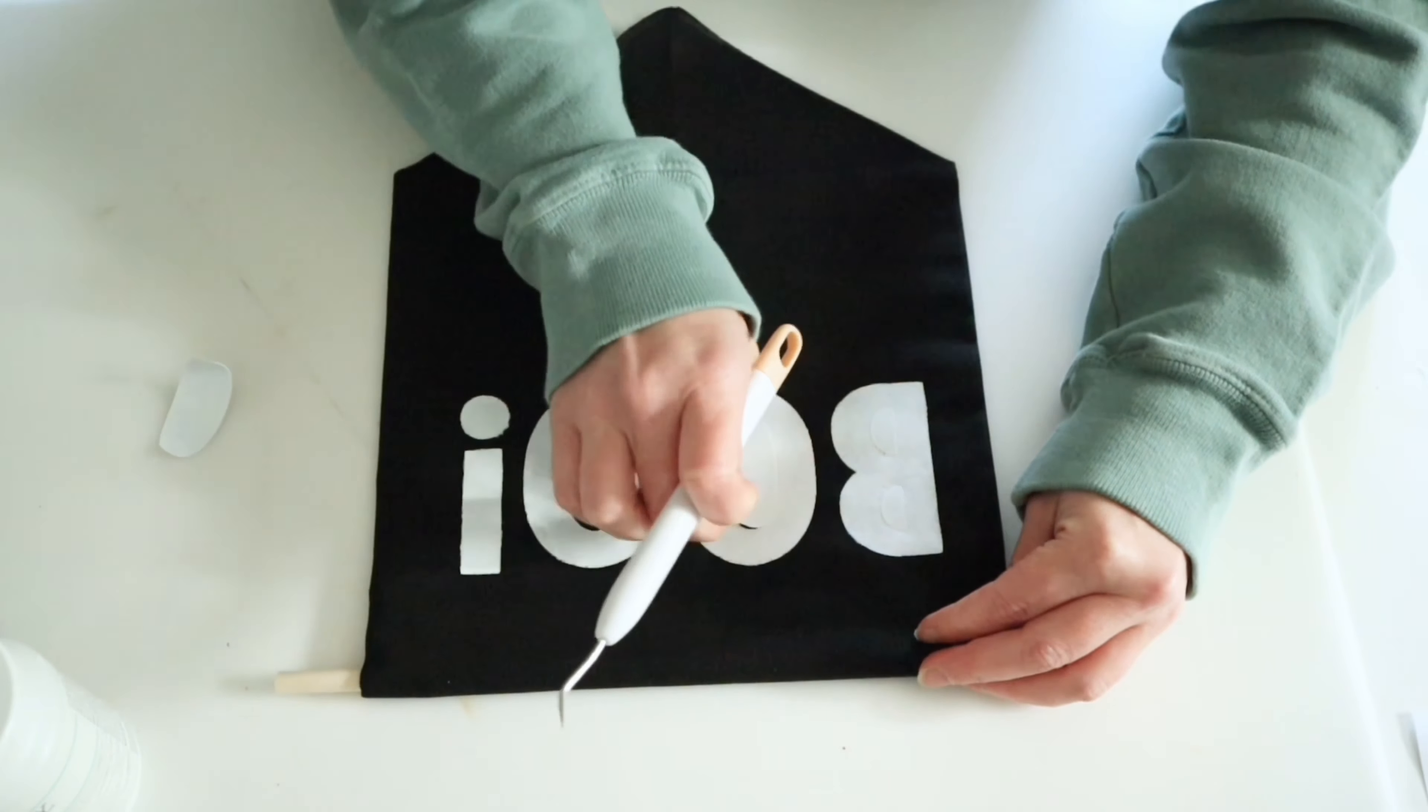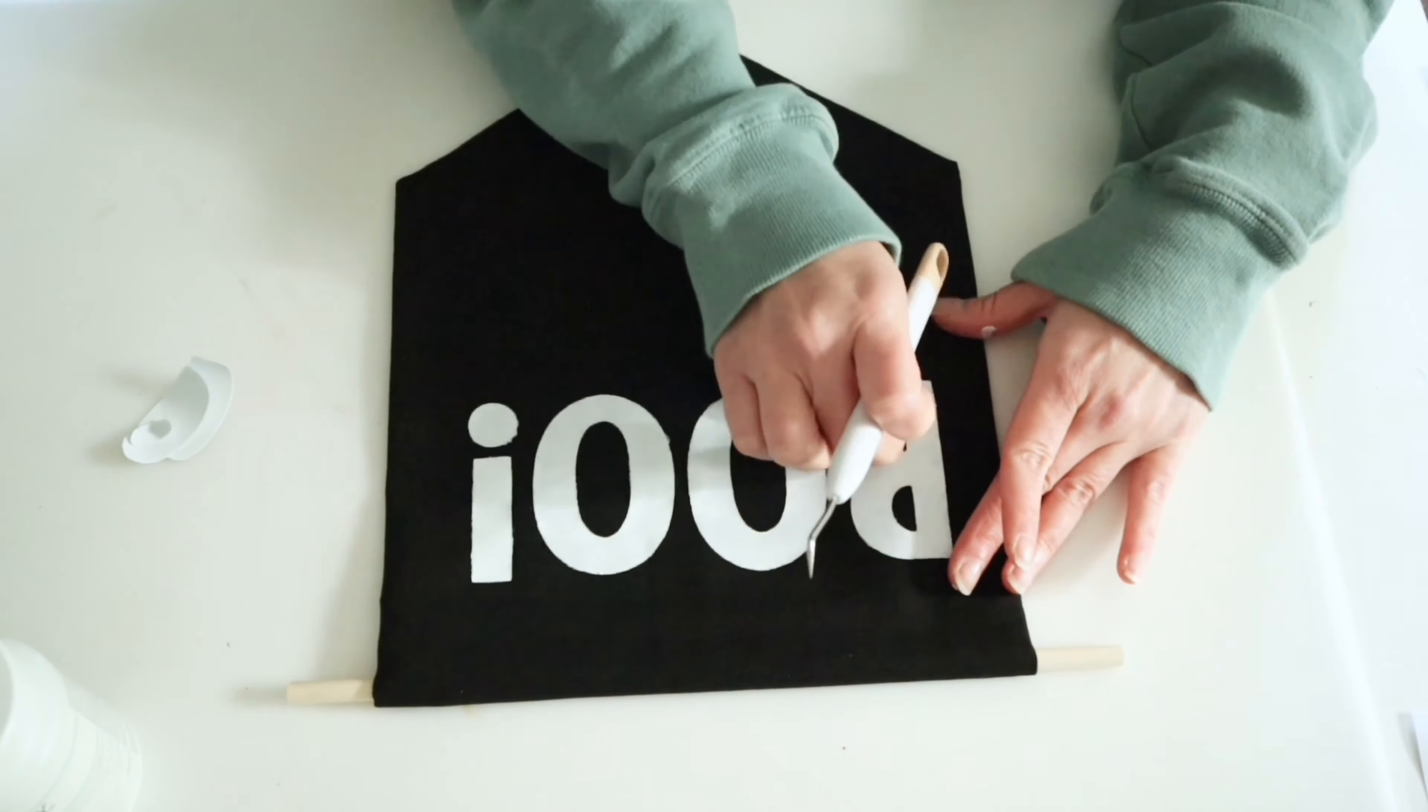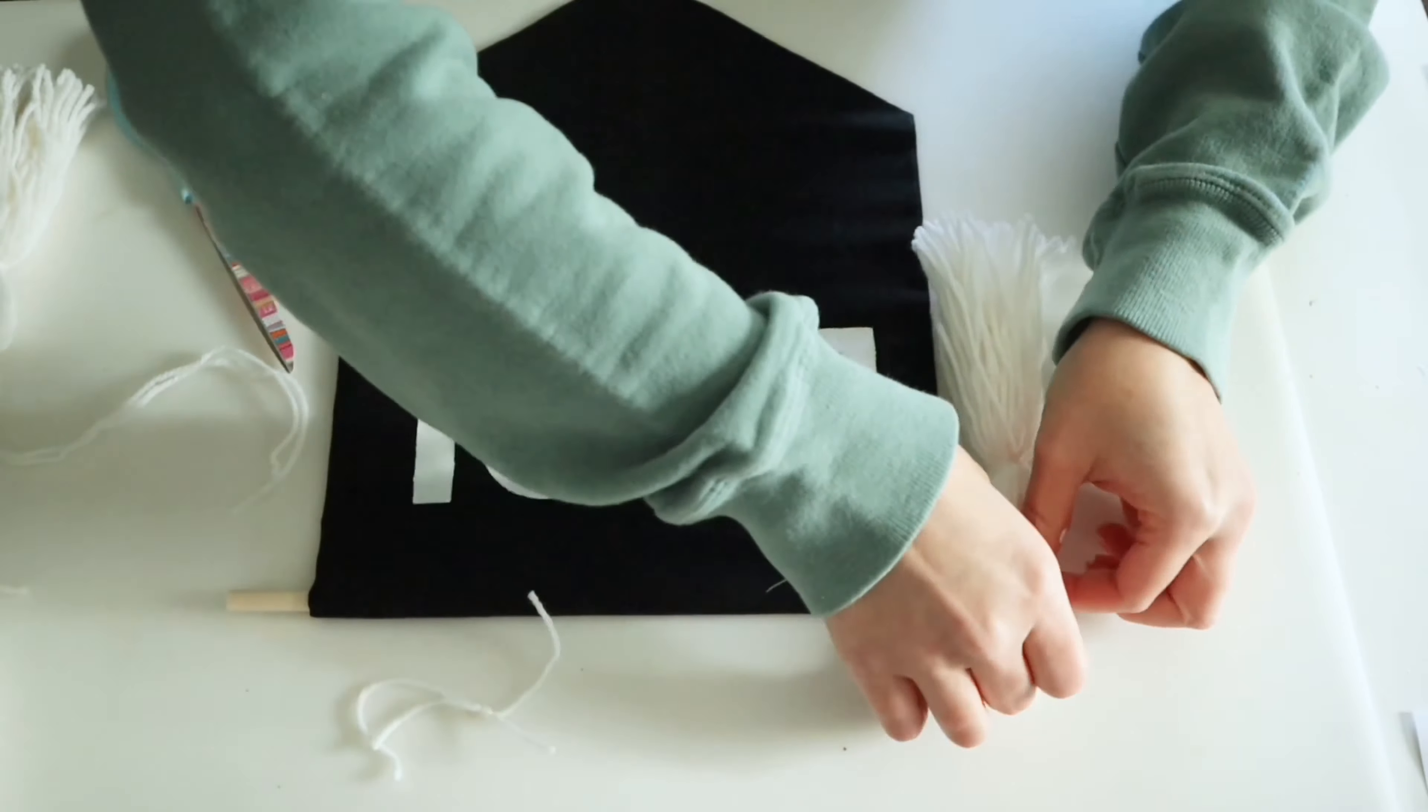And finally for this project, I just used some Dollar Tree yarn to make two little tassels to hang off the sides of this.